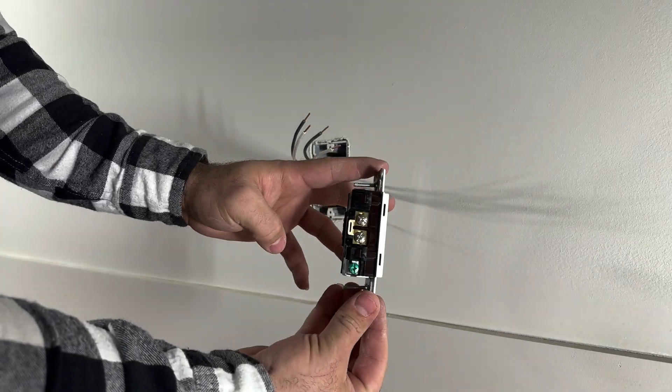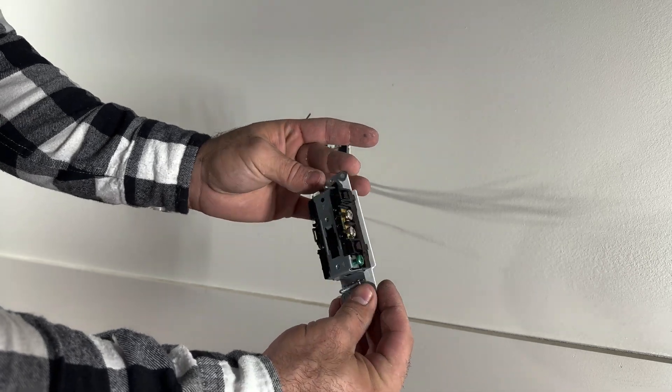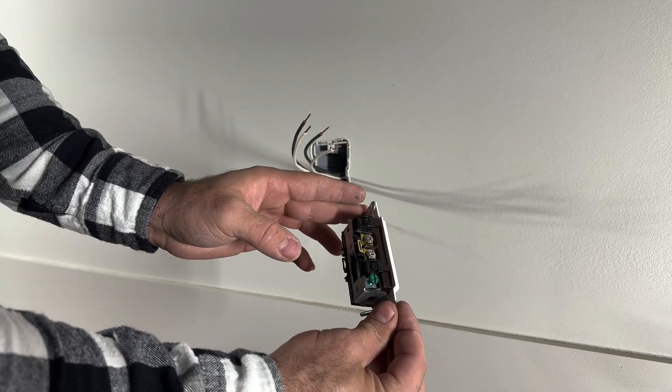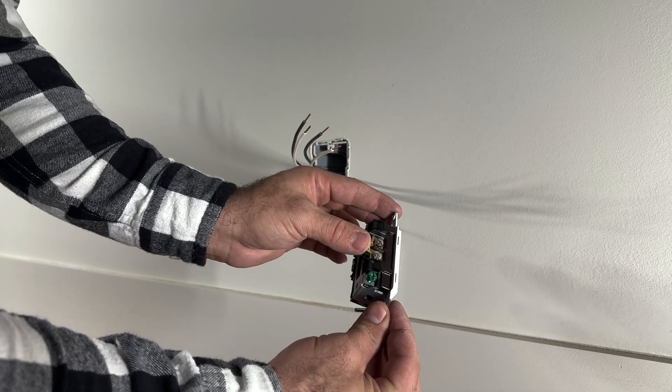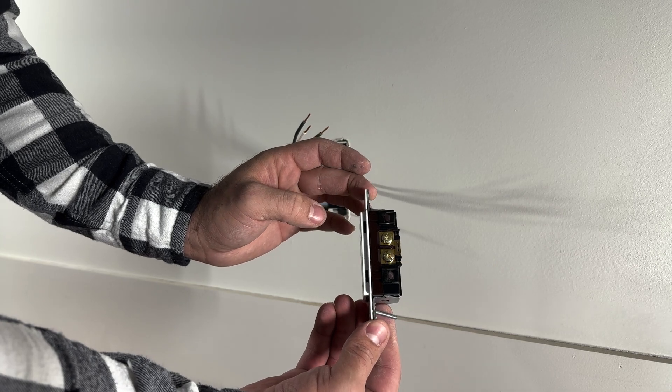As you can see, there is a silver side and a gold brass side. The silver side is for the neutral conductors, and the gold side will be for your power.